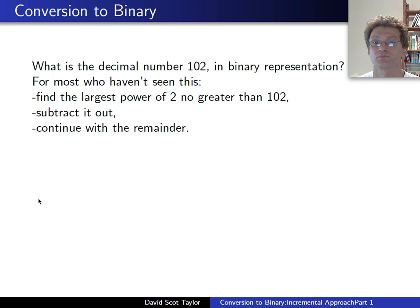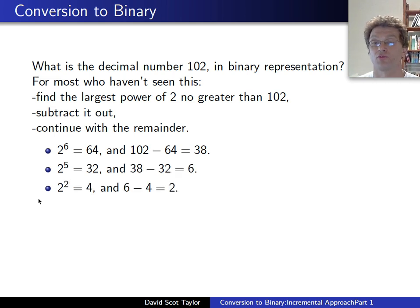So in this case we say, great, subtract out 64, that leaves 38. Next, we're going to subtract 32 from that, that's going to leave 6, we're going to subtract 4 from that, leaving 2, subtract out 2, and we're done. We know that we need the first, second, fifth, and sixth powers of 2 summed up to make the number 102.